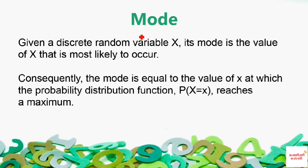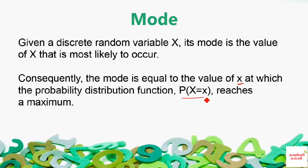First we will see mode. Given a discrete random variable x, its mode is the value of x that is most likely to occur. Consequently, the mode is equal to the value of x at which the probability distribution function reaches a maximum.